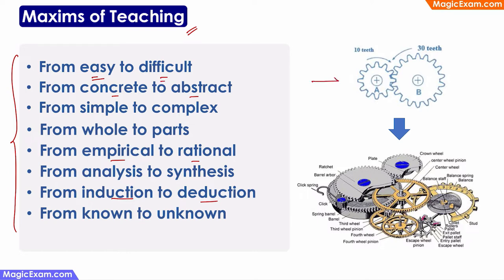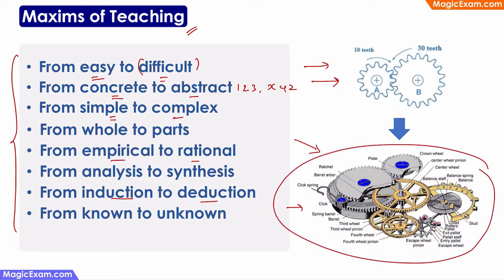For example, first teach how gears work, then teach something more difficult like how a clock with many gears works. From concrete to abstract — first teach the concept of 1, 2, 3 which are concrete, then teach abstract concepts like x, y, z. From simple to complex — first a simple concept, then a more complex one. Whole to parts — first show the entire mechanism of a clock, then teach about the parts. Empirical is something you can observe, measure, and understand through experience or experimentation. Then you use reasoning and logic to arrive at a rational conclusion — so first learn what you can see and observe, then learn things requiring reasoning.